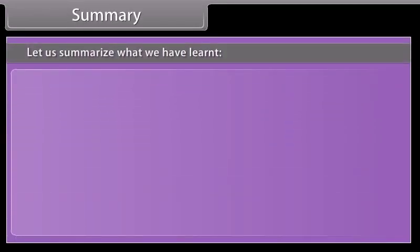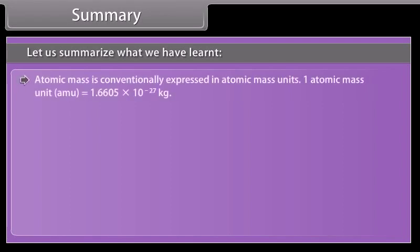Let us summarize what we have learned. Atomic mass is conventionally expressed in atomic mass units. One atomic mass unit or amu is equal to 1.6605 into 10 raised to the power minus 27 kilograms.